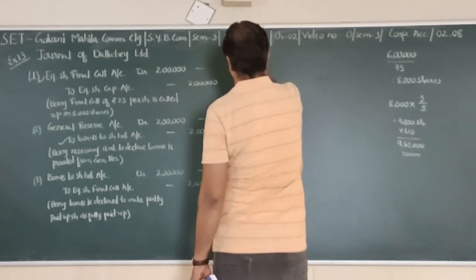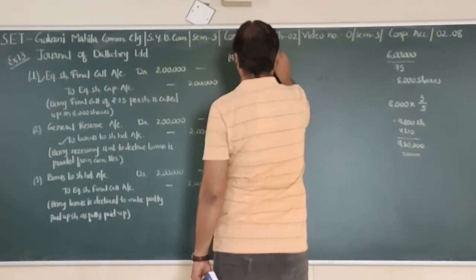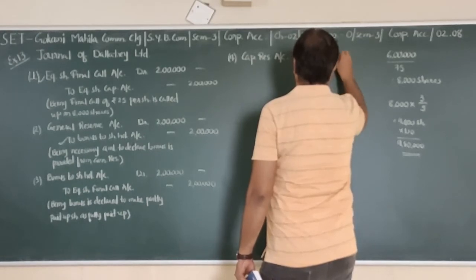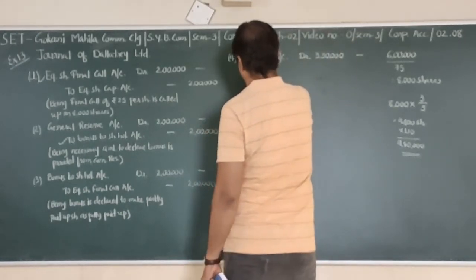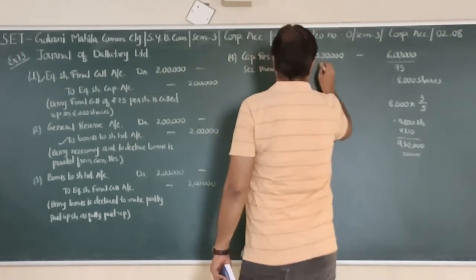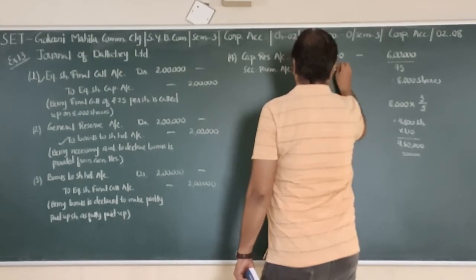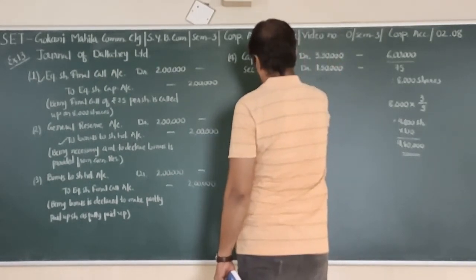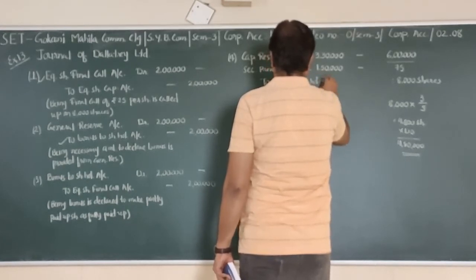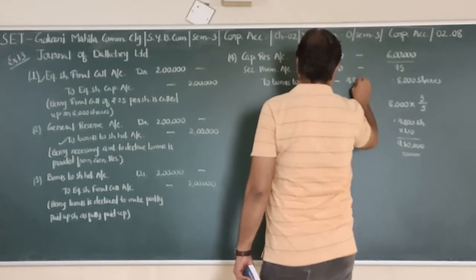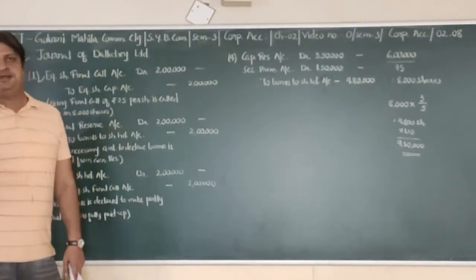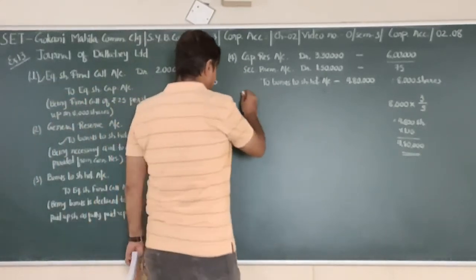So write down the entry: capital reserve account debit 330 thousand, then share premium account debit 150 thousand, to bonus to shareholders account credit 480 thousand.